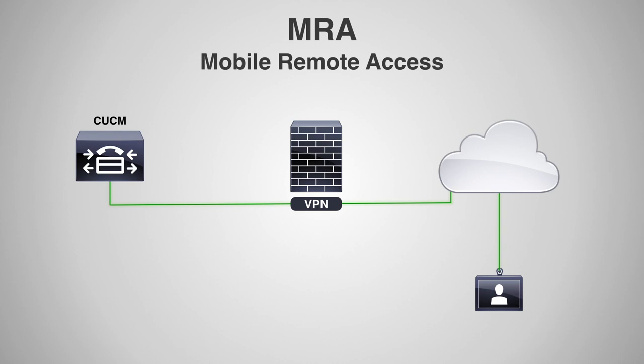The problem is that VPNs are not always easy to set up, and remote workers may not always have access to the VPN. For example, a salesperson using Jabber on their PC might not have a VPN set up, so they wouldn't be able to do audio calling. So after the VCS came into the picture, what Cisco decided to do was to introduce a new device called the Expressway Core and Edge.